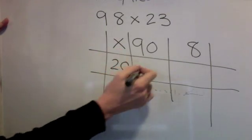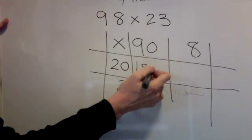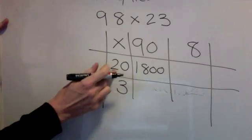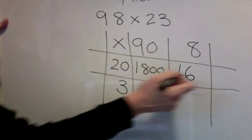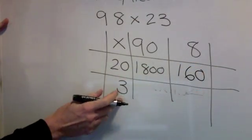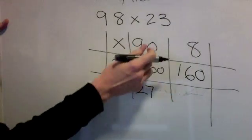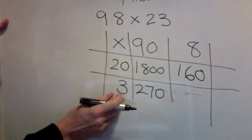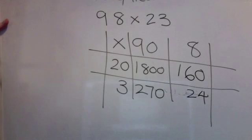2 times 9 is 18, zero, zero, zero, zero. 2 times 8 is 16, zero. 3 times 9 is 27. Add a 0. 3 times 8 is 24. No 0.